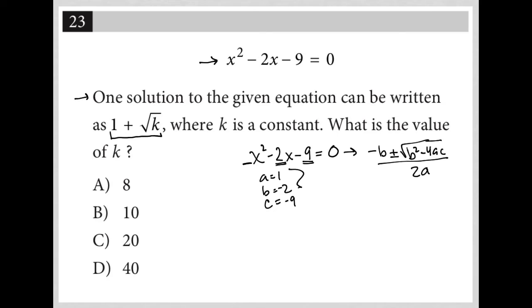When I plug all that into the quadratic formula, instead of -b, I have a positive 2 plus or minus the square root. b² would be 4 (-2 times -2). And then minus 4 times a, which is 1, times c, which is -9, all over 2a, which is 2.